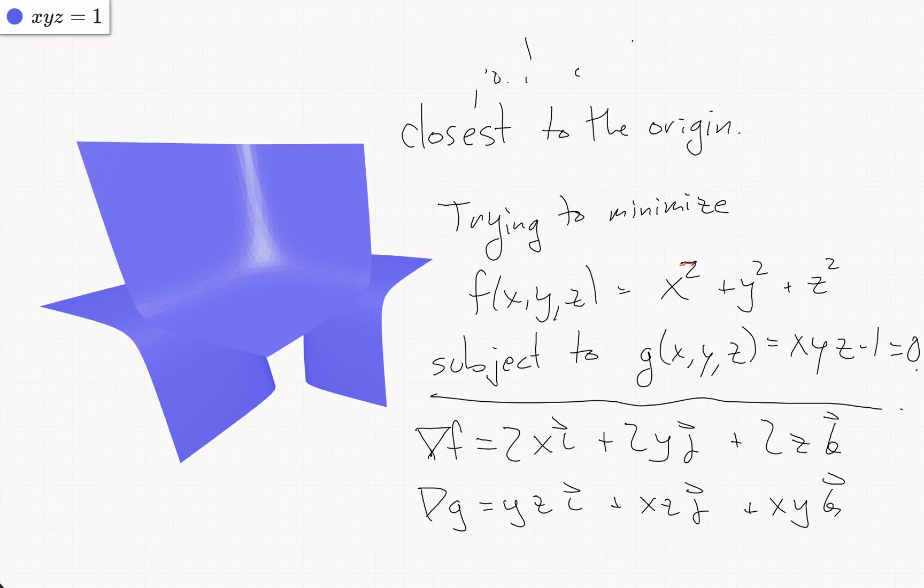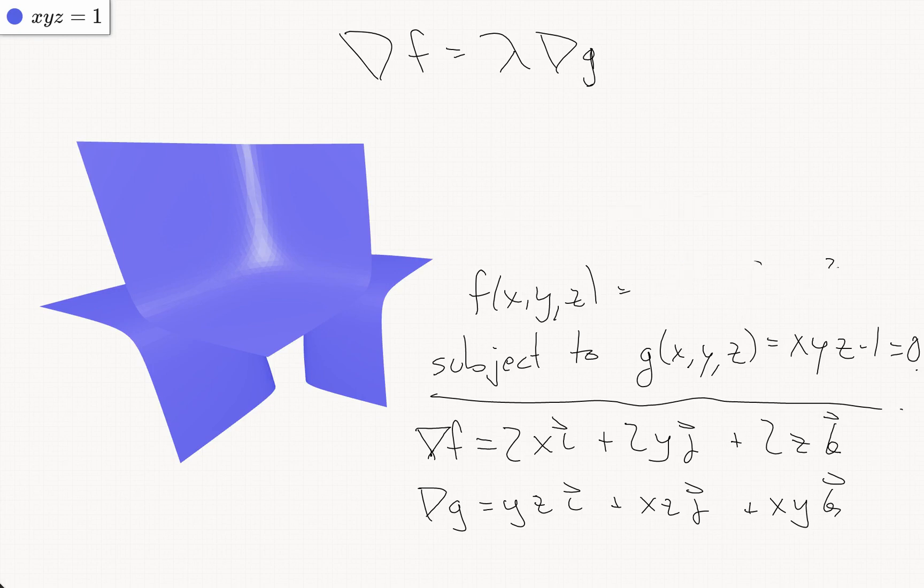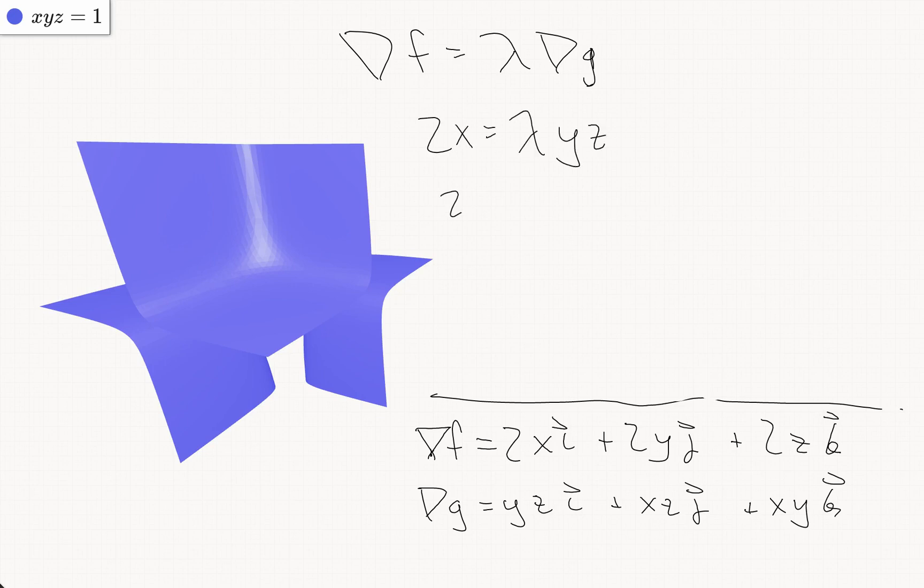So the equation for Lagrange multipliers is nabla f equals lambda nabla g. If we expand that out, that turns into the system of equations 2x equals lambda yz, 2y equals lambda xz, and 2z equals lambda xy.